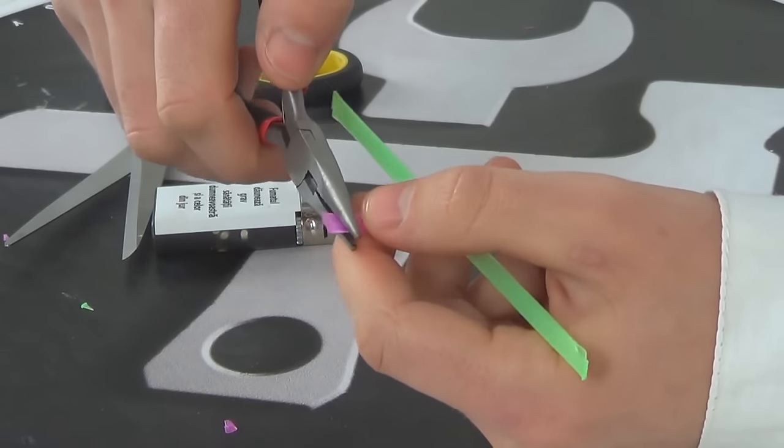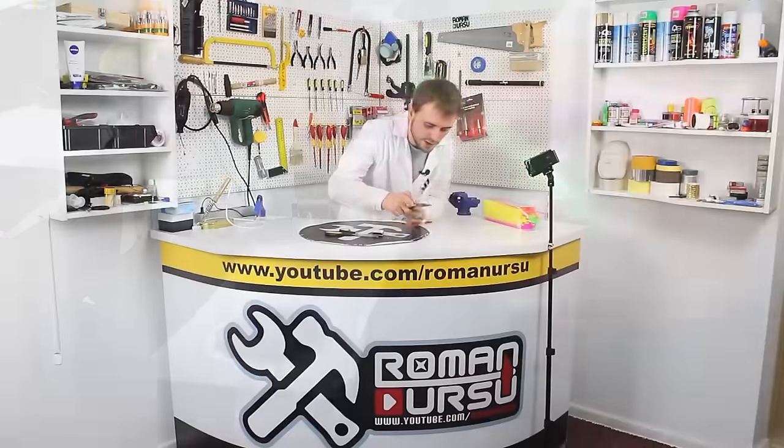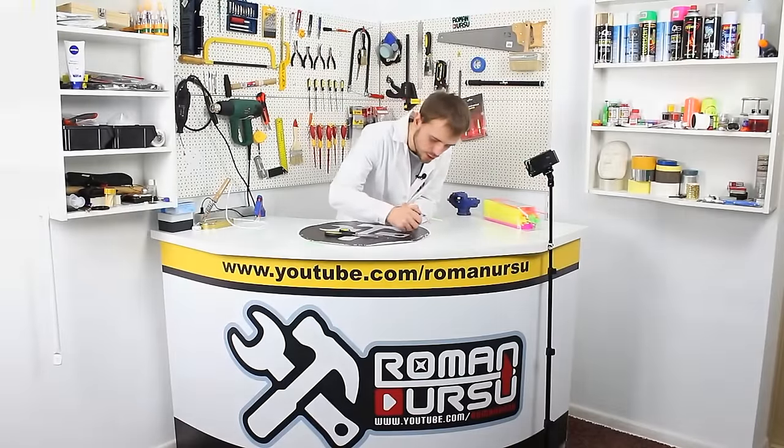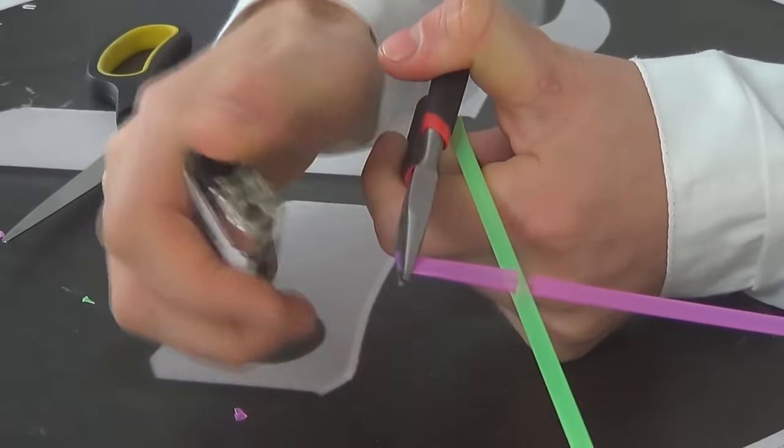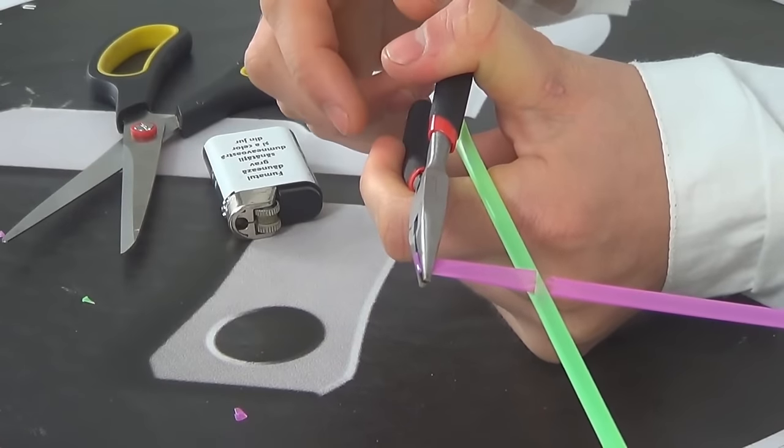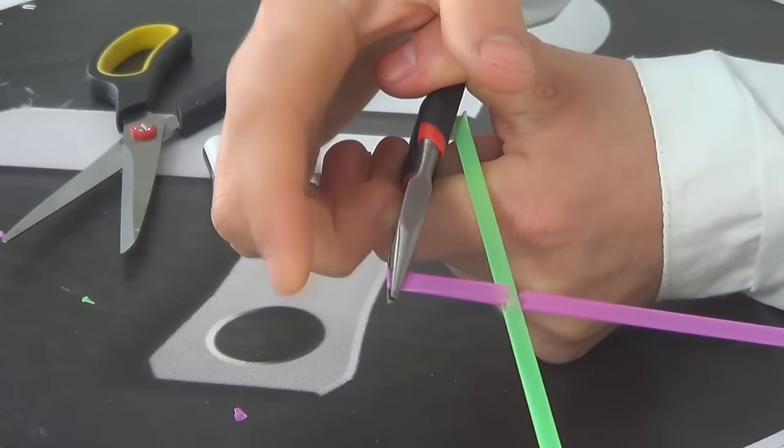Next we take our pliers and seal the end of the tube. Heat it. Wait until it cools. And slightly press down.